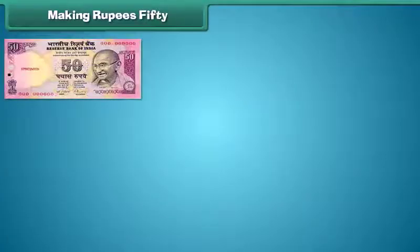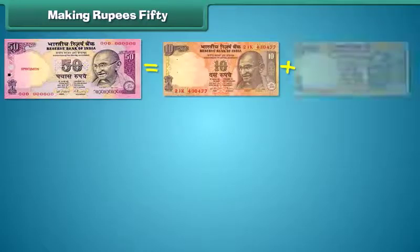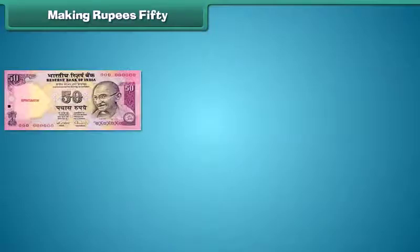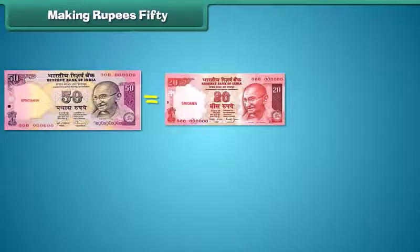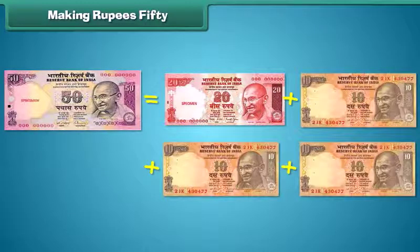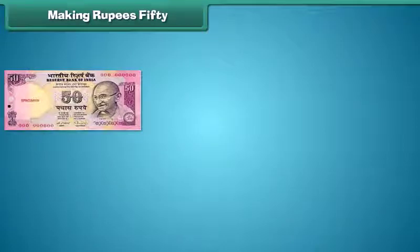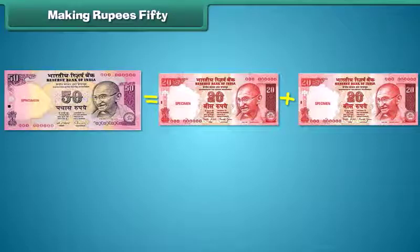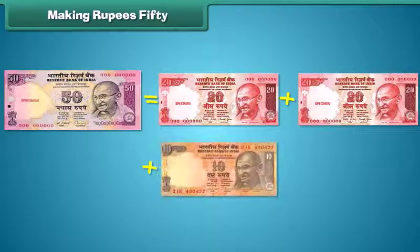Similarly, a 50 rupees note is equal to the sum of 5 ten-rupee notes. A 50 rupees note is equal to the sum of 1 twenty-rupee note and 3 ten-rupee notes. A 50 rupees note is equal to the sum of two 20 rupees notes and one 10 rupees note.